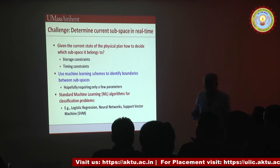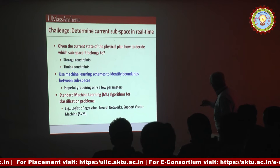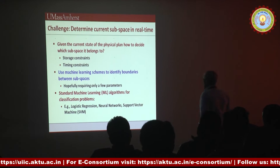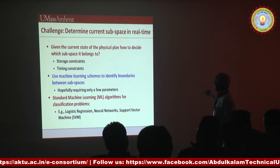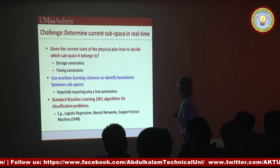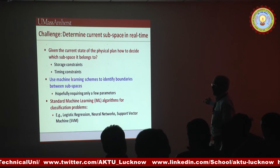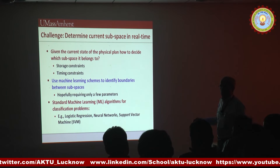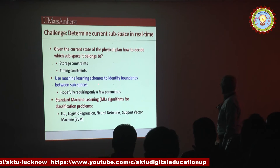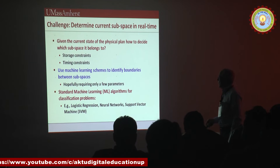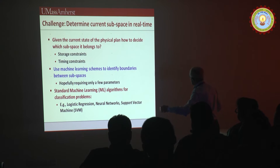The challenge is to determine whether the current state is safe or marginal. In principle, we could use a huge table that tells us whether each state is safe or marginal, but this would require a huge memory. We could use a complicated algorithm to do the determination, but this would take too much time — and this is a real-time system. So we decided to use machine learning techniques to identify the boundaries between the subspaces, hoping to require only a few parameters so that computation will be fast.